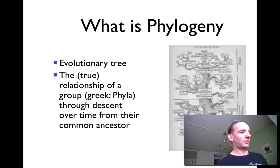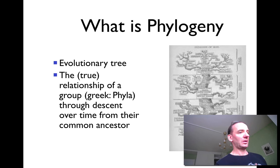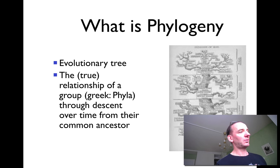So phylogeny means the true relationship of a group. An example of this is a phylogenetic tree, which shows how different things are related to one another.